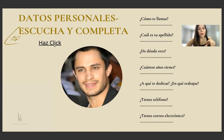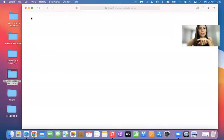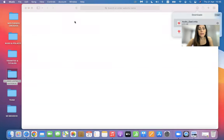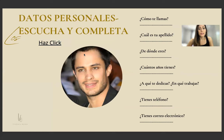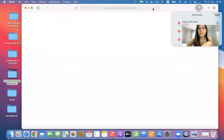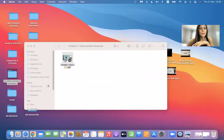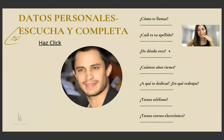Sorry for the technical problems, let's go again. ¿Cómo te llamas? Me llamo Gael. ¿Cuál es tu apellido? García Bernal. ¿De dónde eres? Soy de México. ¿Cuántos años tienes? Tengo 42 años. ¿A qué te dedicas? ¿En qué trabajas? Soy actor. ¿Tienes teléfono? Sí, 456-398-276. ¿Tienes correo electrónico? Gael.b arroba gmail.com.